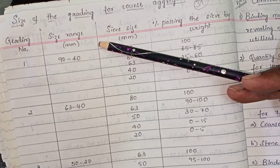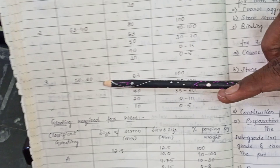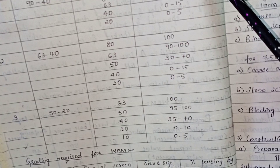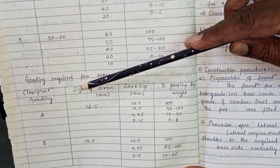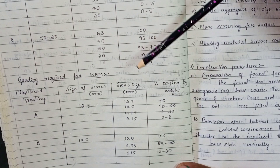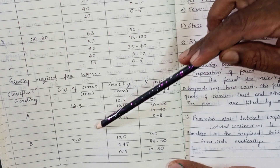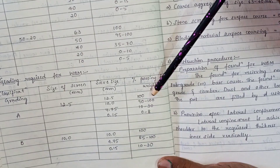Grading required for WBM: for grade A, a 12.5 mm screen is used; for grade B, a 10 mm screen is used. Sieve sizes 12.5 mm, 10 mm, 4.75 mm, and 0.15 mm are used. For grade A, the passing percentage range is 100, 90–100, 0–20, and 10–30 respectively. These are the grading requirements for WBM material.